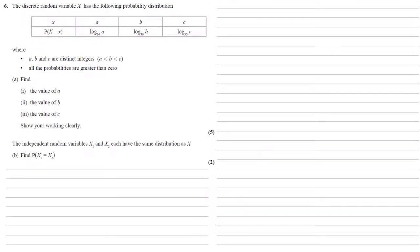The discrete random variable X has the following probability distribution. When X is A, the probability of X equaling A is log to the base 36A. For B, the probability is log base 36B, and for C, the probability is log base 36C, where A, B, and C are distinct integers with C bigger than B, bigger than A, and all the probabilities are greater than zero.